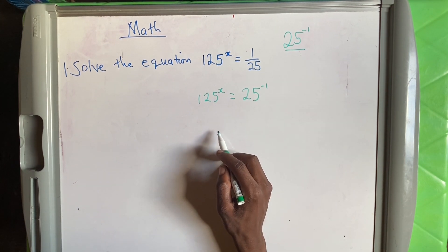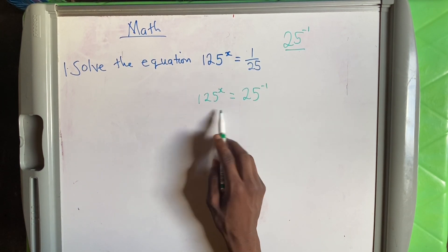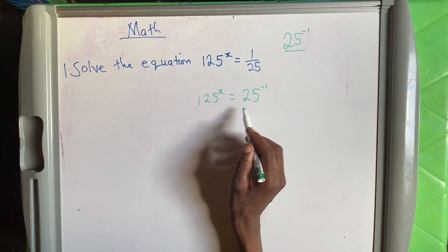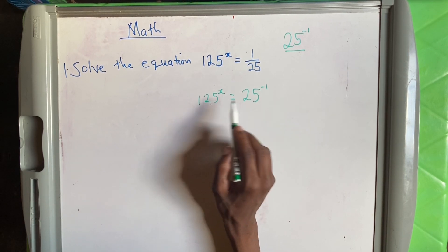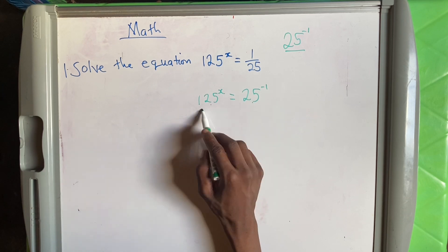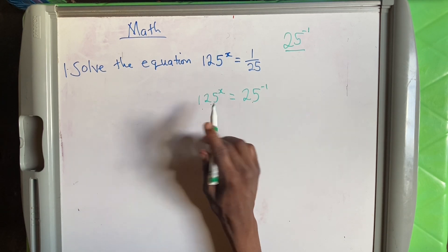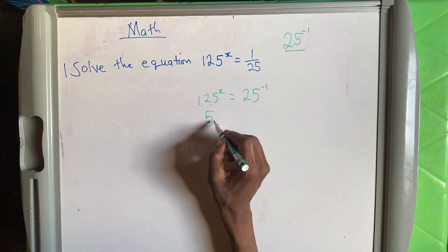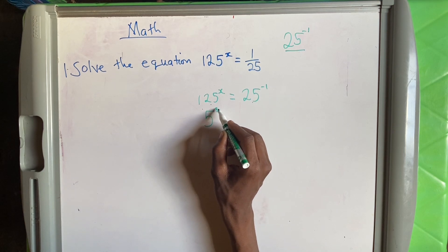Then you have to make these two have the same bases. So what can we do to have the same bases? We cannot make this one to have 25, neither can we make this one to have 125. So we're going to use 5. What number can we power 5 to get 125? It's 3.